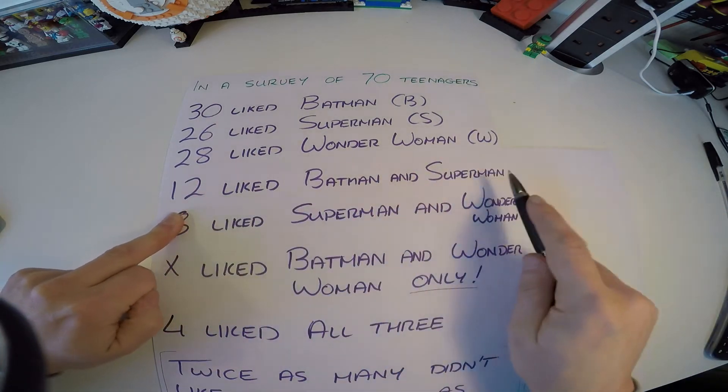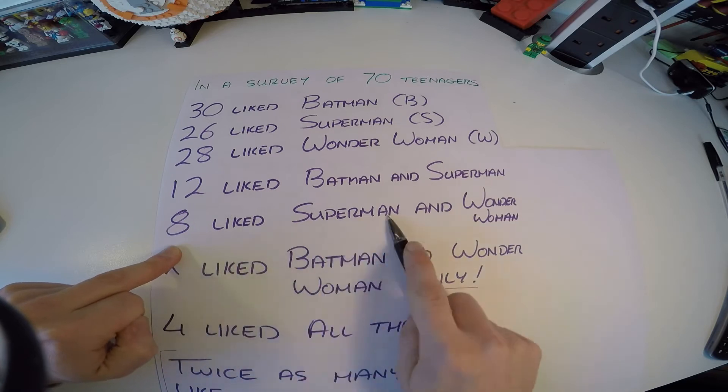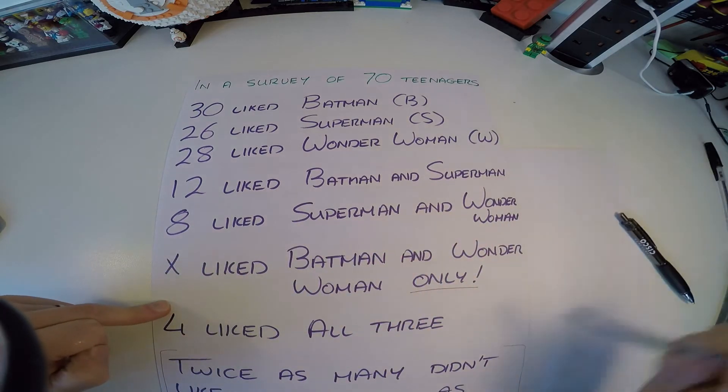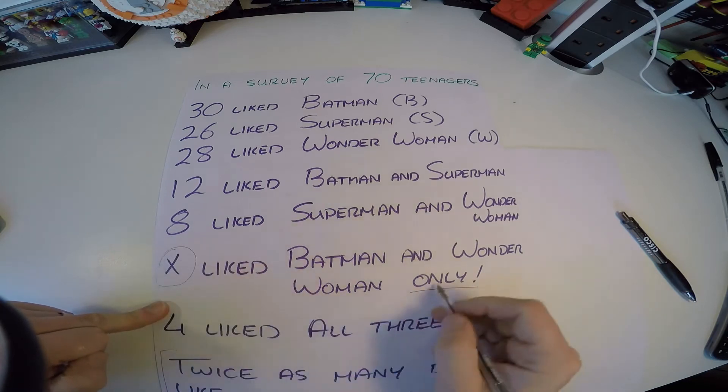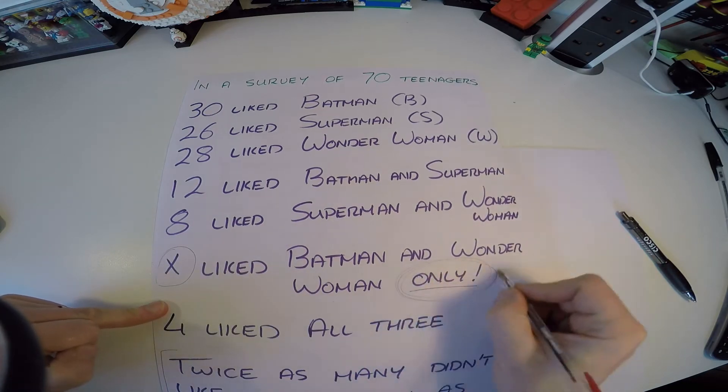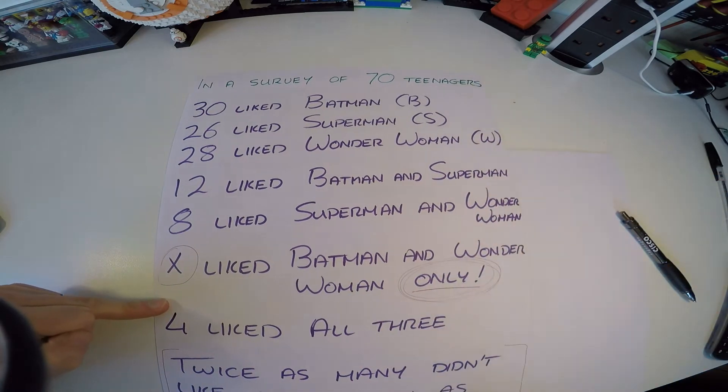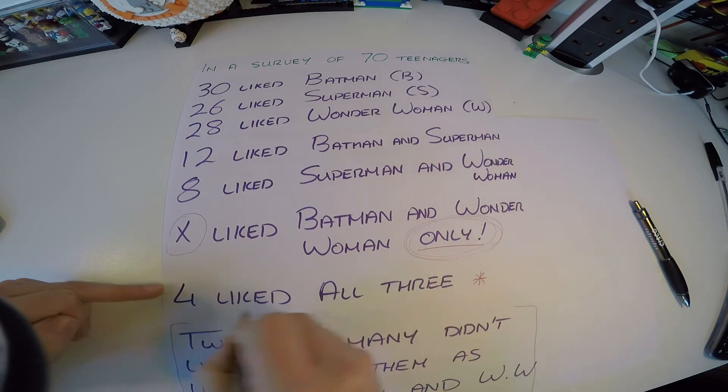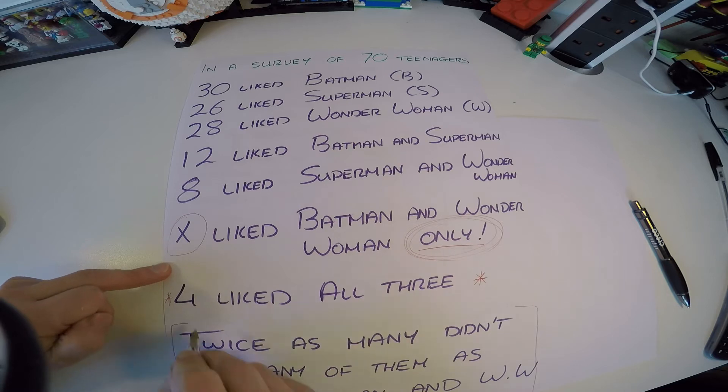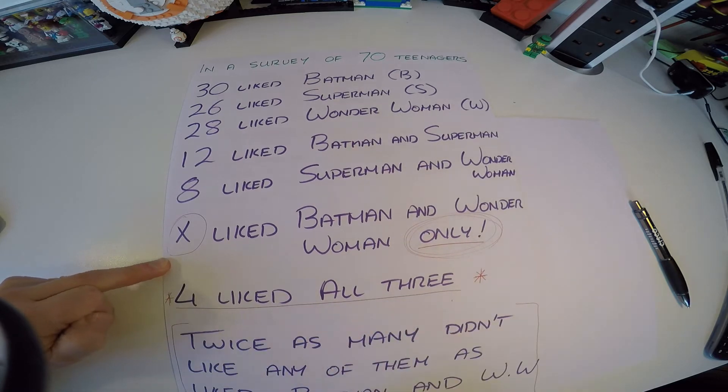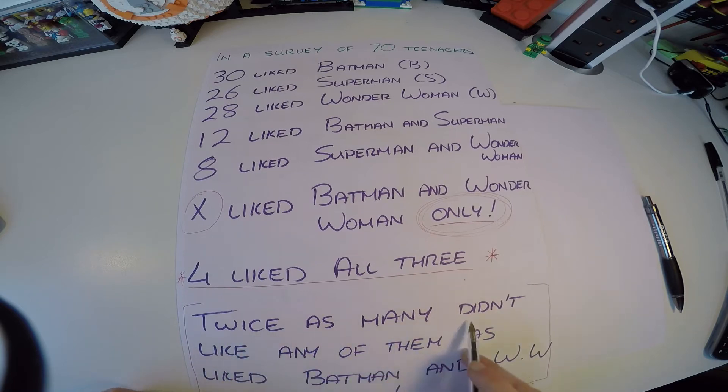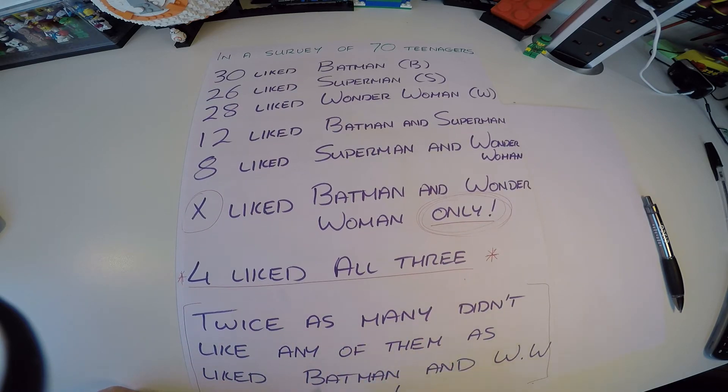Then 12 like Batman and Superman, 8 like Superman and Wonder Woman, but x, it says then x liked Batman and Wonder Woman only. Now this is an important term 'only,' it's the first time we've seen the word only. And then it says 4 liked all three, that's like the key bit of information for us, this all three.